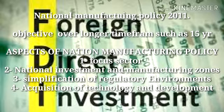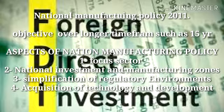Third, increasing the rate of job creation in manufacturing — to create 100 million additional jobs by 2025. Emphasis will be given to creating appropriate skill sets among rural migrants and the urban poor, making growth inclusive. Fourth, increasing depth in manufacturing with a focus on domestic value addition and addressing national strategic requirements. Fifth, enhancing the global competitiveness of Indian manufacturing through appropriate policy support. Sixth, ensuring the sustainability of growth, particularly with regard to the environment.